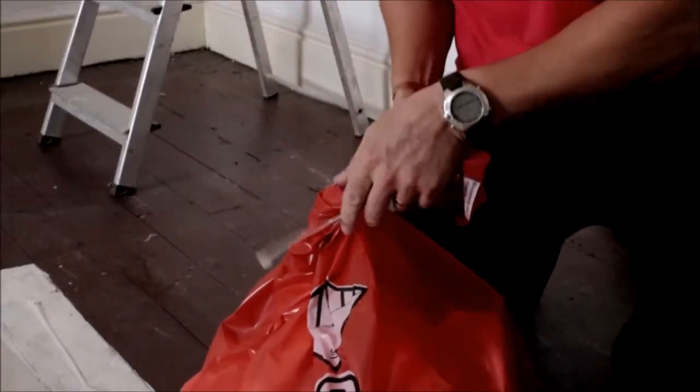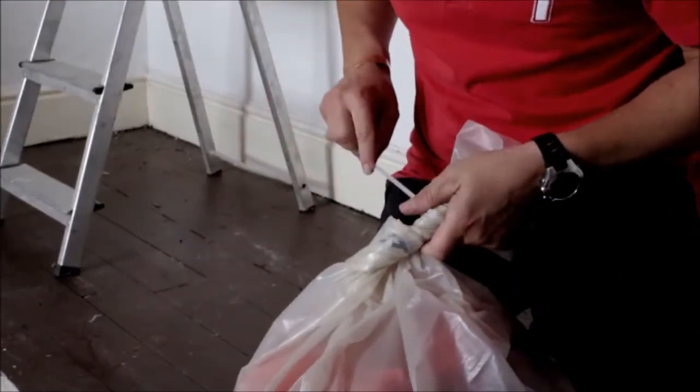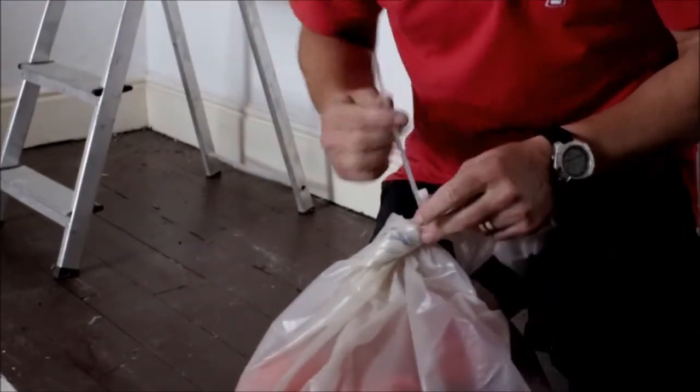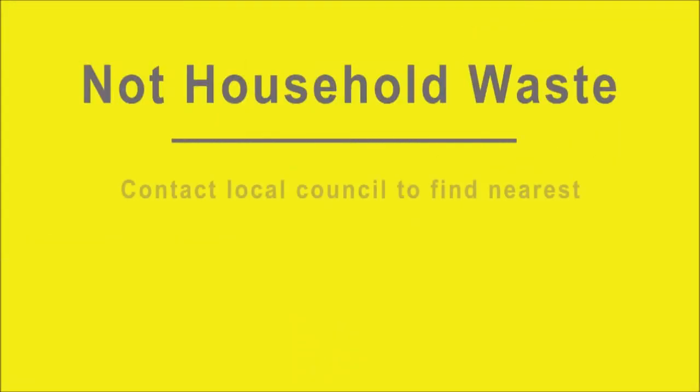Seal the red asbestos bag with the cable tie and place this in the clear asbestos bag and seal with the other cable tie. This bag must not be disposed of as general household waste. Contact your local council to find your nearest household waste site that accepts asbestos waste free of charge.